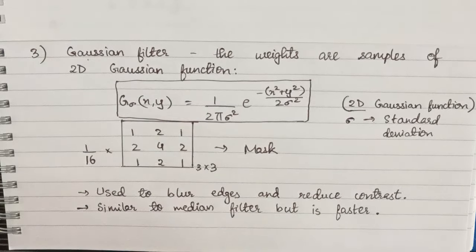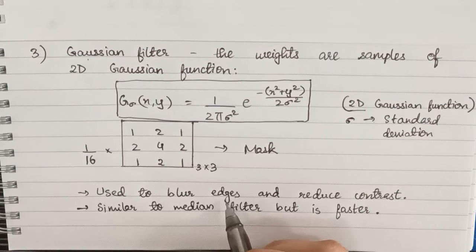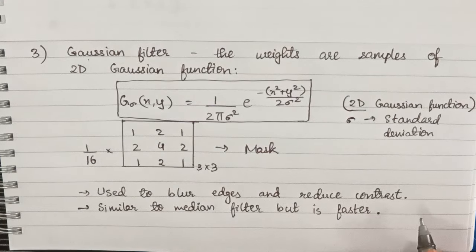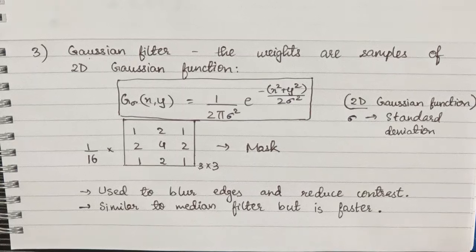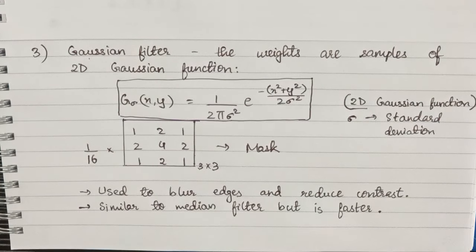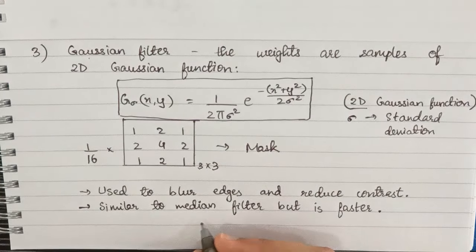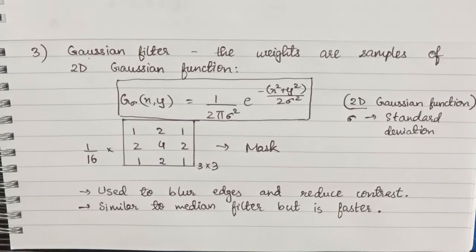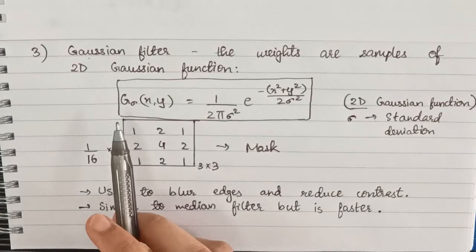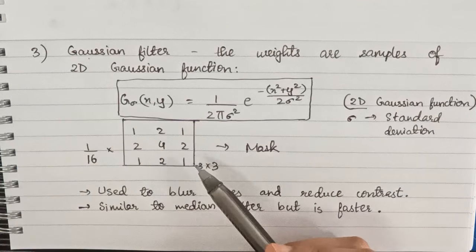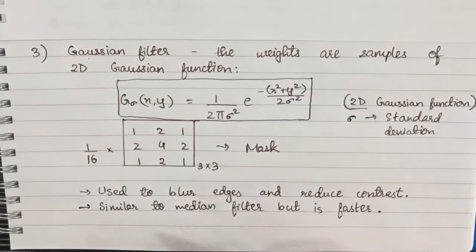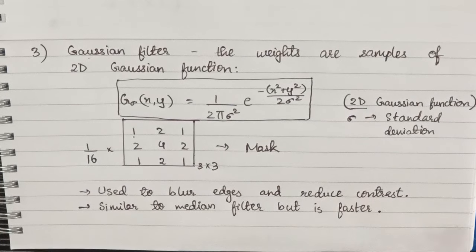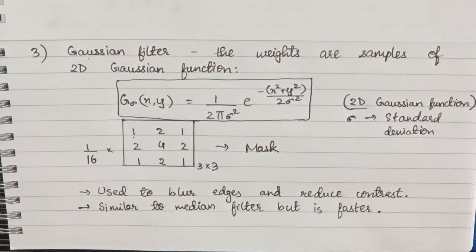Gaussian filter is used to blur edges and reduce contrast. It is similar to median filter but this one is faster. In median filter what we use is sorting, but in Gaussian function we just use the multiplication of individual pixels with these pixels, so that's why Gaussian filter is faster than median filter.